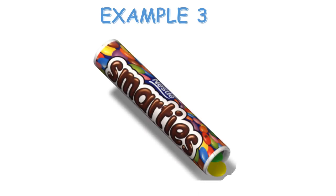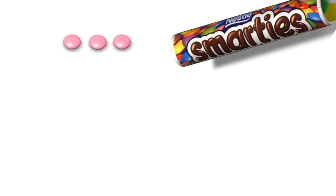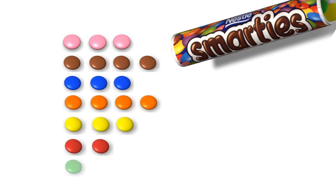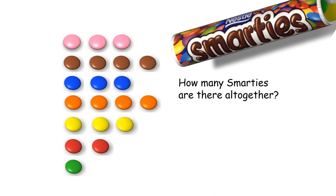I have a tube of Smarties laid out by colour in neat columns. In my tube I have 3 pink, 4 brown, 3 blue, 4 orange, 3 yellow, 2 red, and 1 green. How many Smarties are there altogether? There are 20 in total. So we're going to use that as our baseline - there are 20 Smarties in my packet.